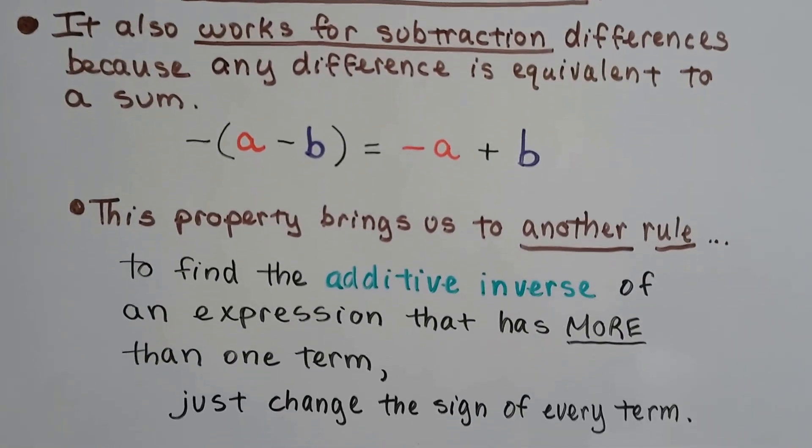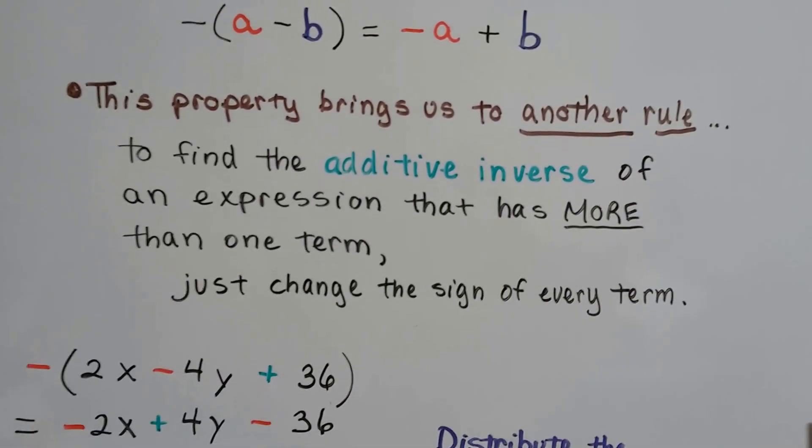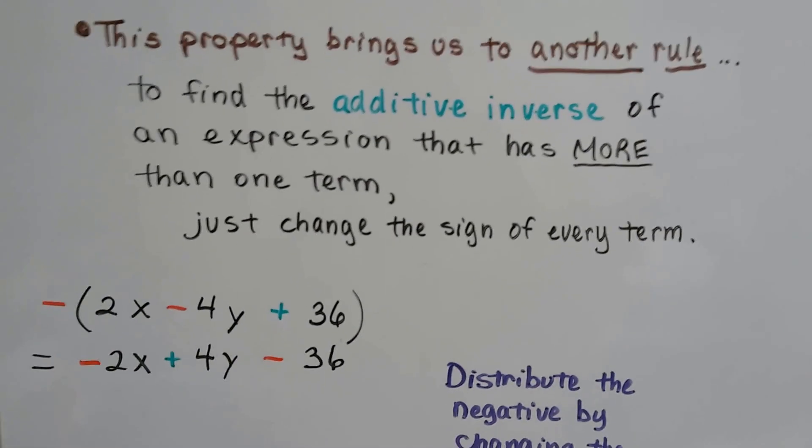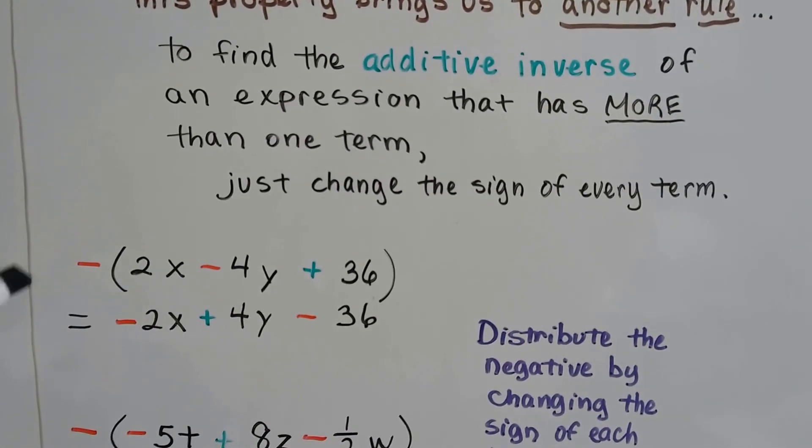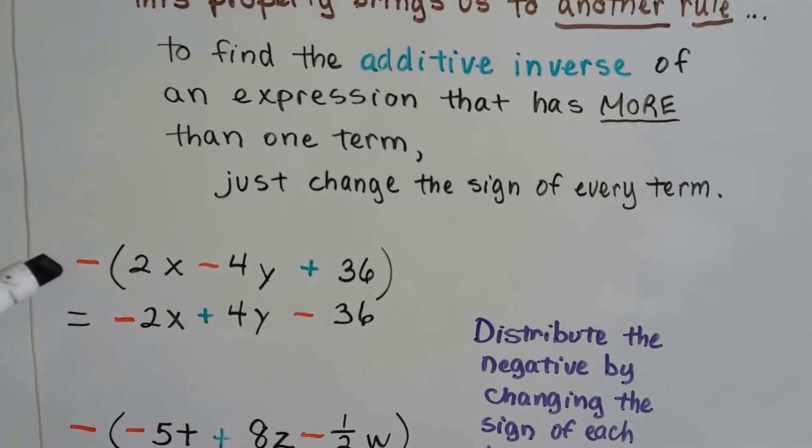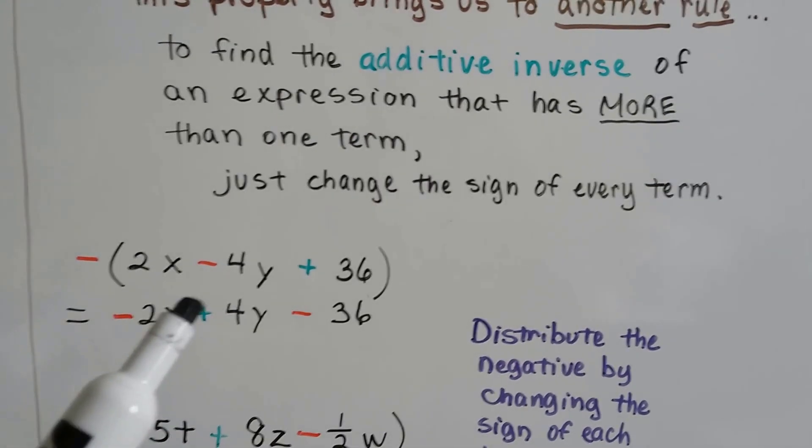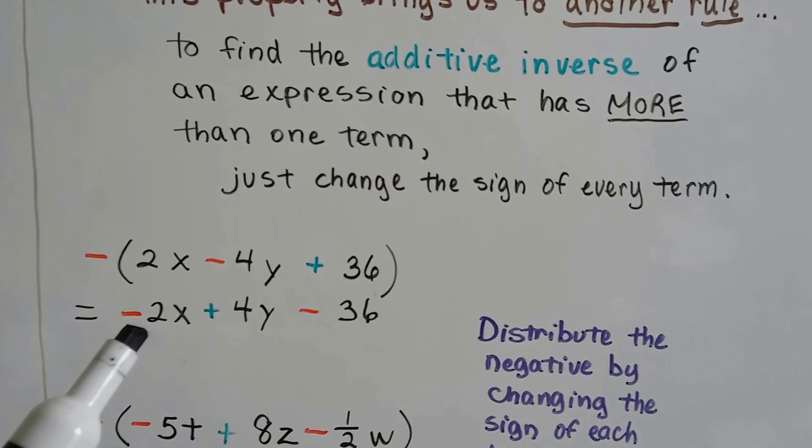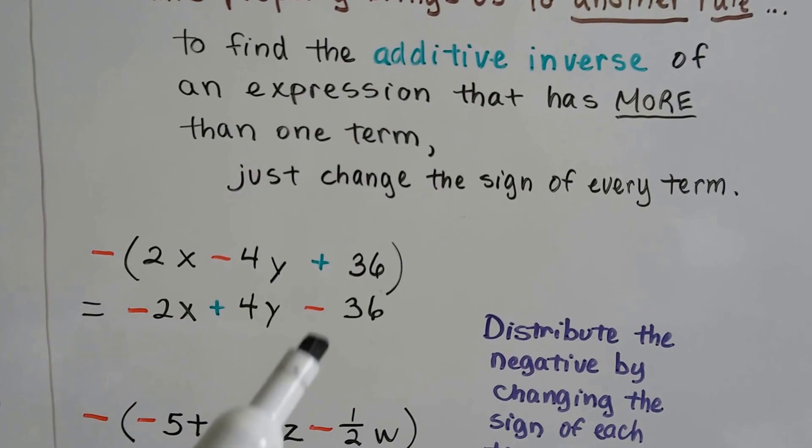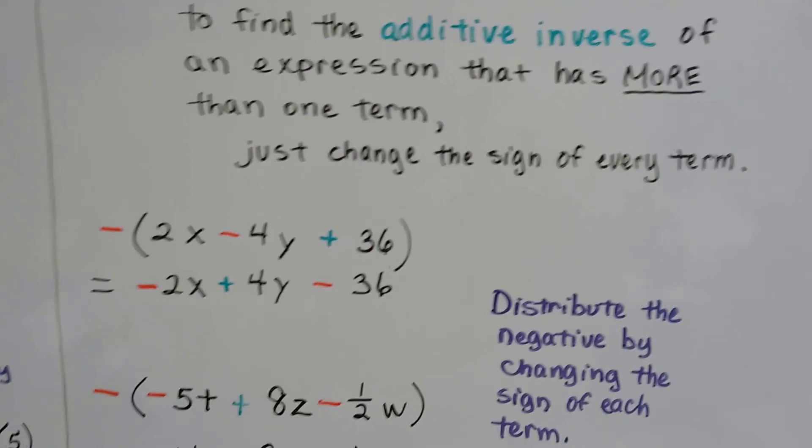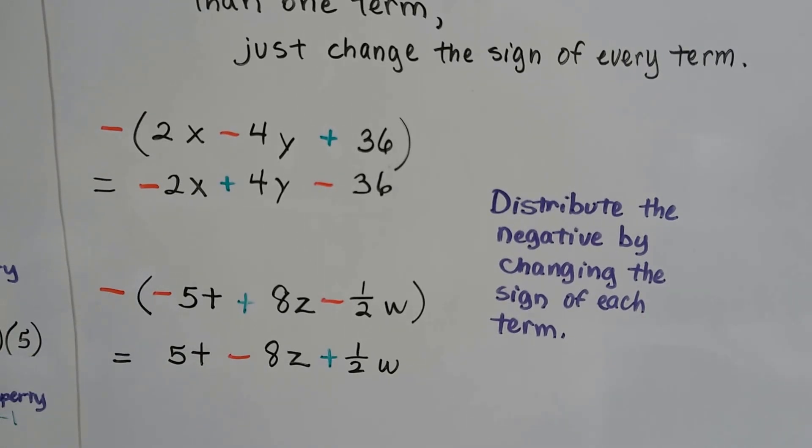And this property brings us to another rule. To find the additive inverse of an expression that has more than just one term, we just change the sign of every term. Less work. Just look at the sign and make it the opposite sign. So if we have a negative out here in front of this positive 2x, we make it negative 2x. Instead of minus 4y, we get plus 4y. Instead of plus 36, we get minus 36. We just distribute that negative by changing the sign of each term.